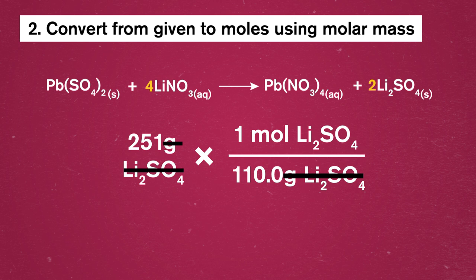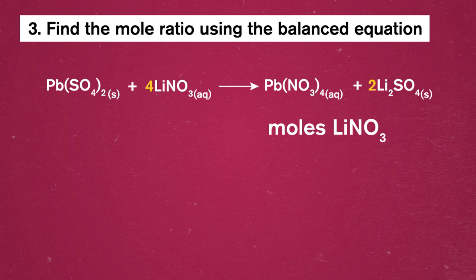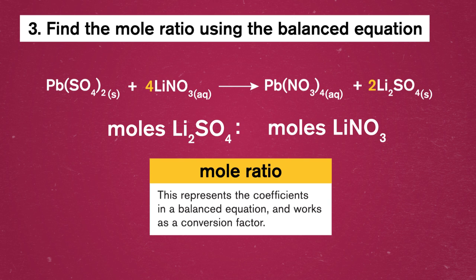Step 3 is our most important one. It's where we convert from moles of our given substance to moles of the substance we're trying to find, using something called the mole ratio. It represents the coefficients in a balanced chemical reaction and works as a conversion factor. We could look at any of the compounds in the reaction and use a mole ratio to find out how much there is in terms of another. It just depends on what we have and what we're asked to find.